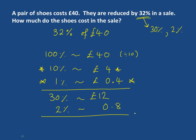Now what we do is we add up our 30% and our 2%, which will give us 32%. That gives us the answer of 12.8, and because that's money, that's £12.80. So 32% is £12.80.